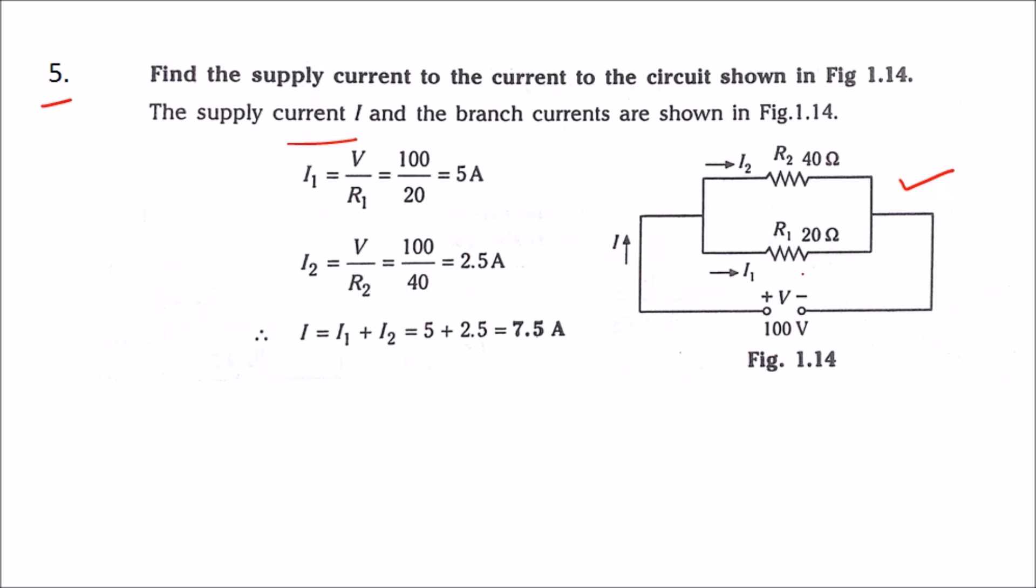If resistances are connected in series, the current passing through the resistances will be the same, whereas if the resistances are connected in parallel, the voltage across the resistances will be the same. Here, the supply voltage is 100 volts, and the voltage across R1 and R2 will also be 100 volts.